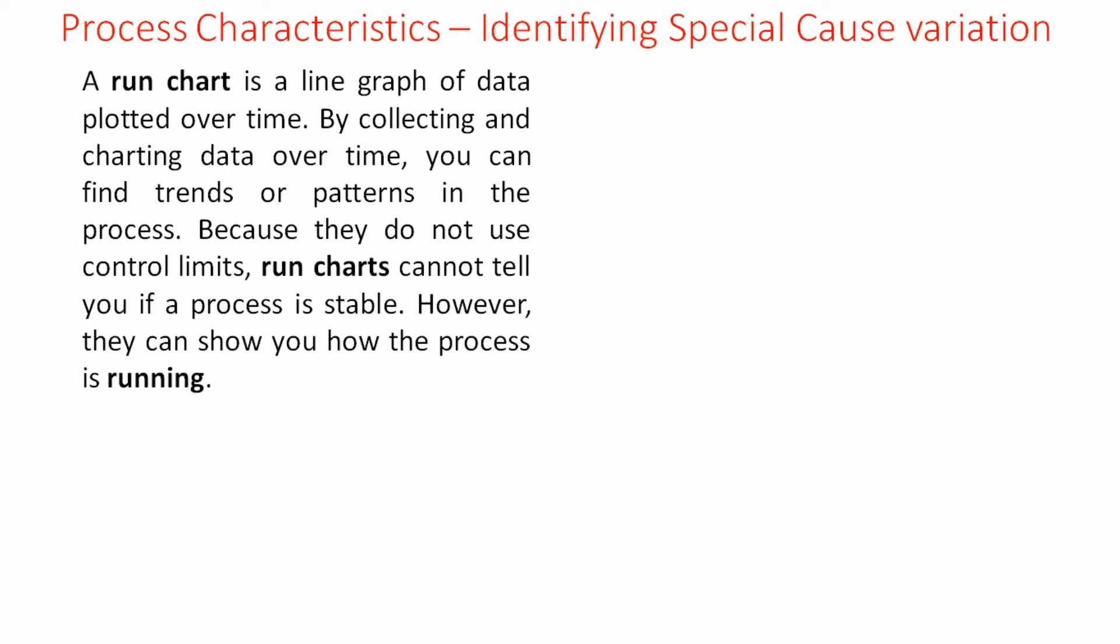On other months associates process 40 transactions on an average and in December volume is less and hence they are processing 30 transactions on an average. So by looking at that data you have decided a goal that you want to improve the productivity from 30 transactions to 40 transactions. In January normal volume will come and team will be able to process 40 transactions as they have the capacity. There is no improvement required.